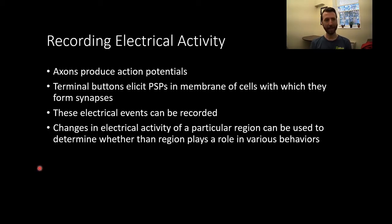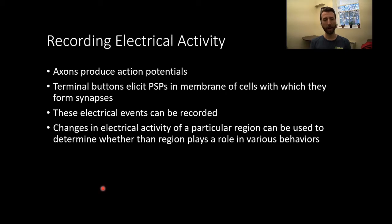As we have talked about in some detail at this point, axons produce action potentials — big sweeping changes in electrical activity within a neuron. Terminal buttons elicit postsynaptic potentials in the membrane of cells with which they form synapses. So we have exchanges of depolarization and hyperpolarization events. These electrical events can be recorded, as we have not only changes in the charge of the neurons themselves, but the electrical environment of the extracellular fluid is changing as well as ions move in and out with neural activity. Changes in electrical activity of a particular region can be used to determine whether that region plays a role in various behaviors.